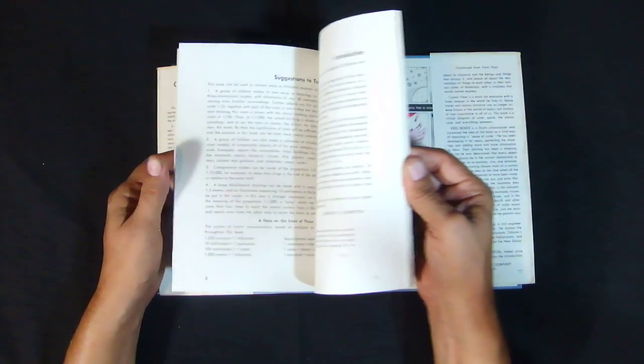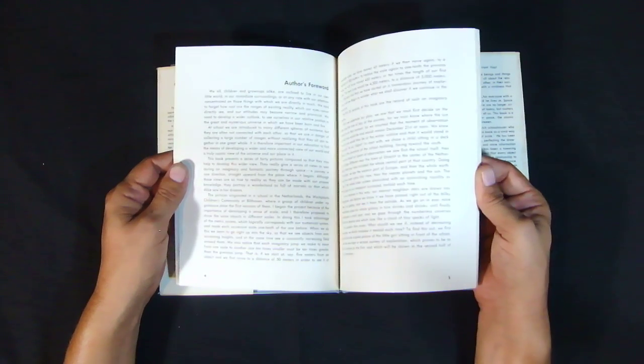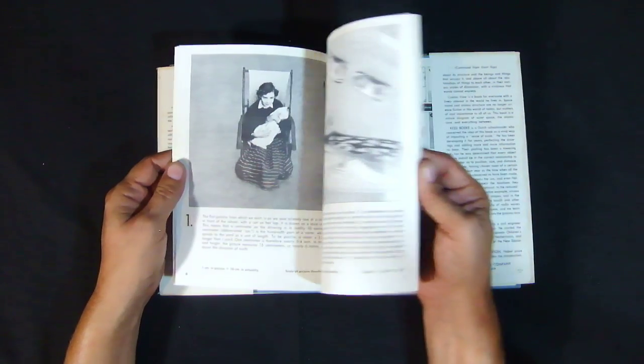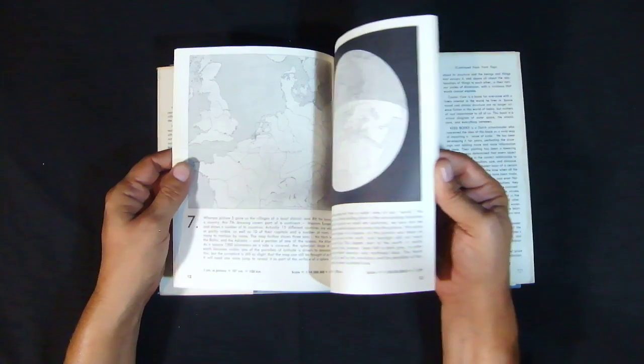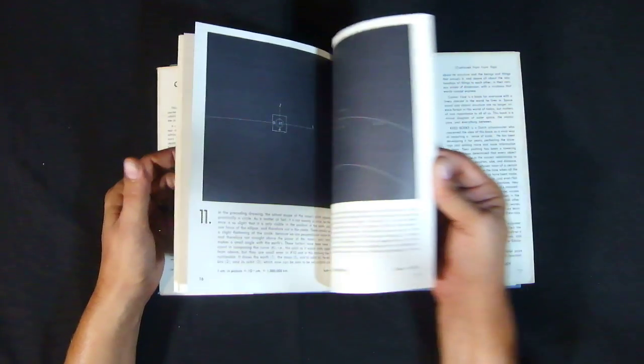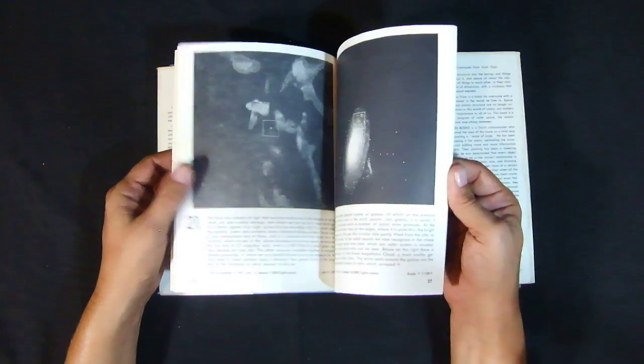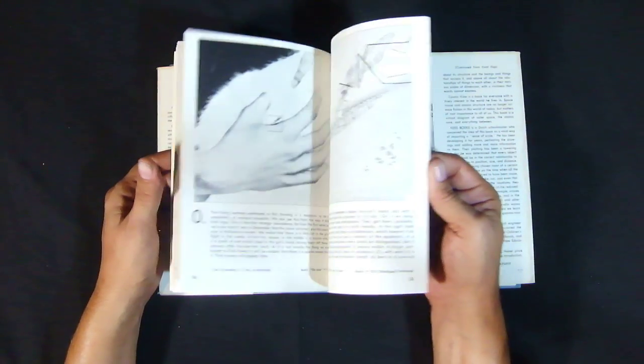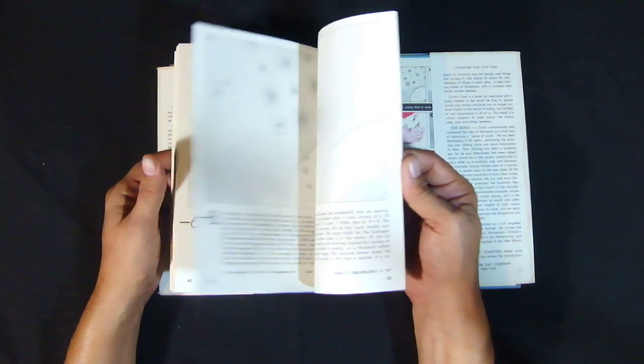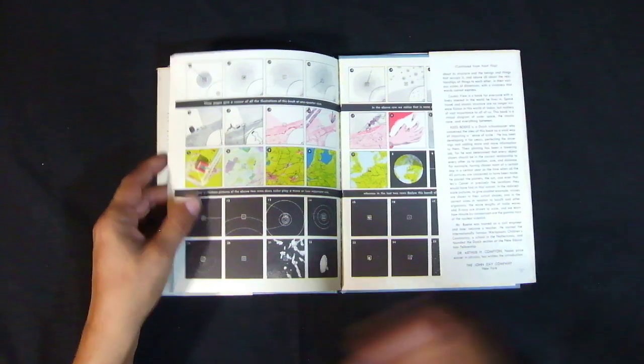The pages are white. It's basically pretty much like what the Eames did with the Powers of Ten film. They kind of put it together a little more graphically.